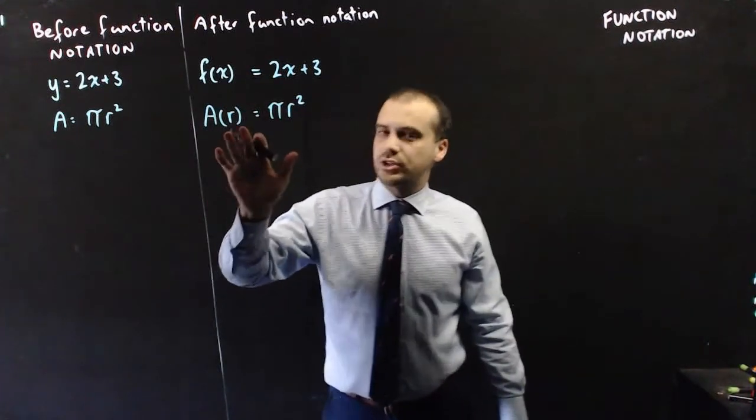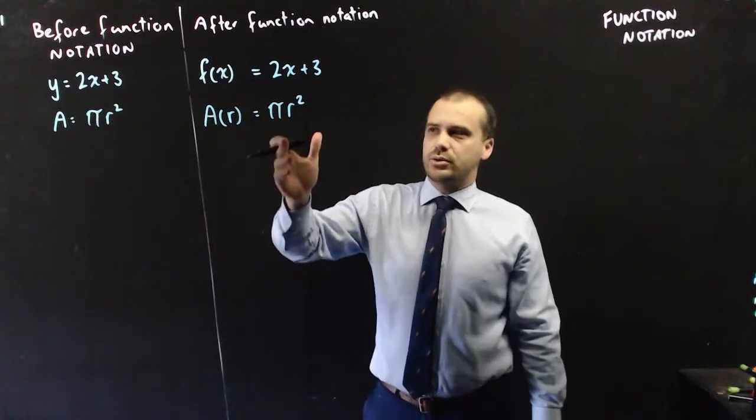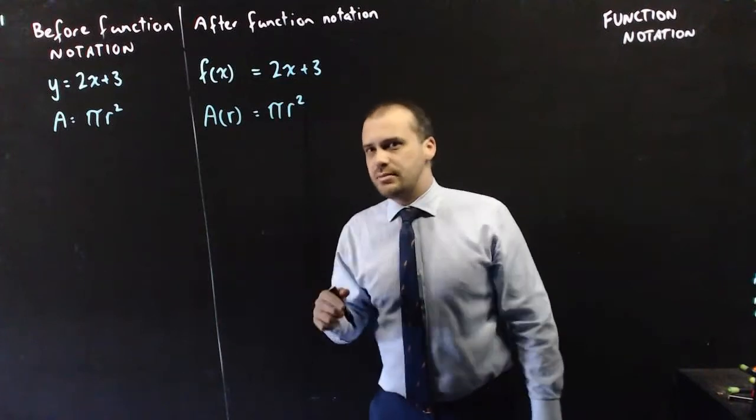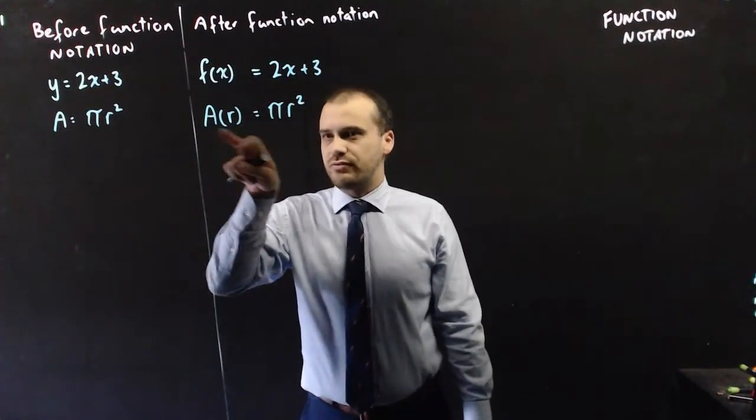What this says is area as a function of radius is equal to pi r squared, or a of r equals pi r squared. This is handy because it tells you what the dependent and independent variables are.